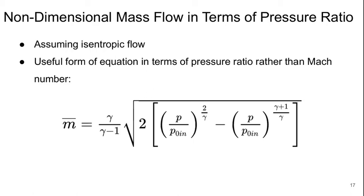If we assume that our flow is isentropic, we can rewrite this non-dimensional mass flow. Instead of being in terms of Mach number, we can write it directly in terms of the pressure ratio. So this actually turns out to be quite useful because the pressure ratio is often something that we can calculate more easily than the Mach numbers.